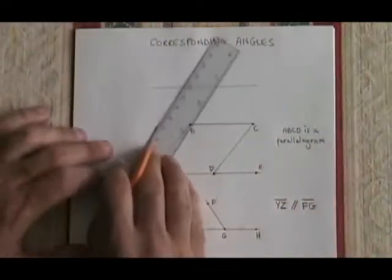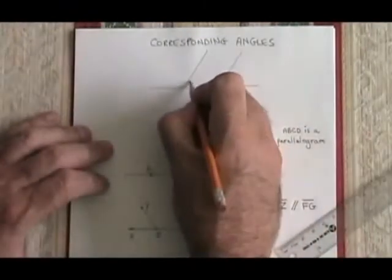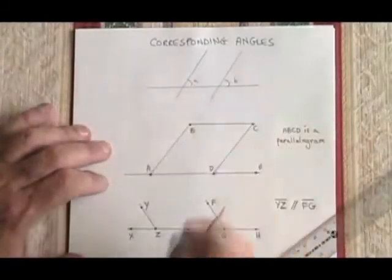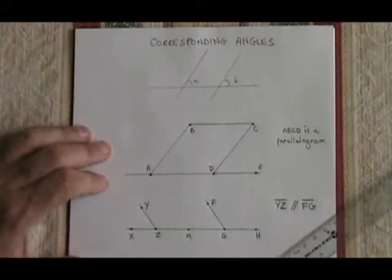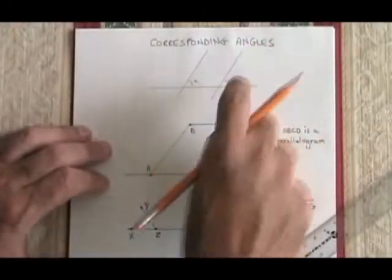We know that those two lines are parallel because I drew them on either side of this ruler. What this means is that angle A and angle B must be equal in measure. They are corresponding angles, and you can see visually what corresponding means.